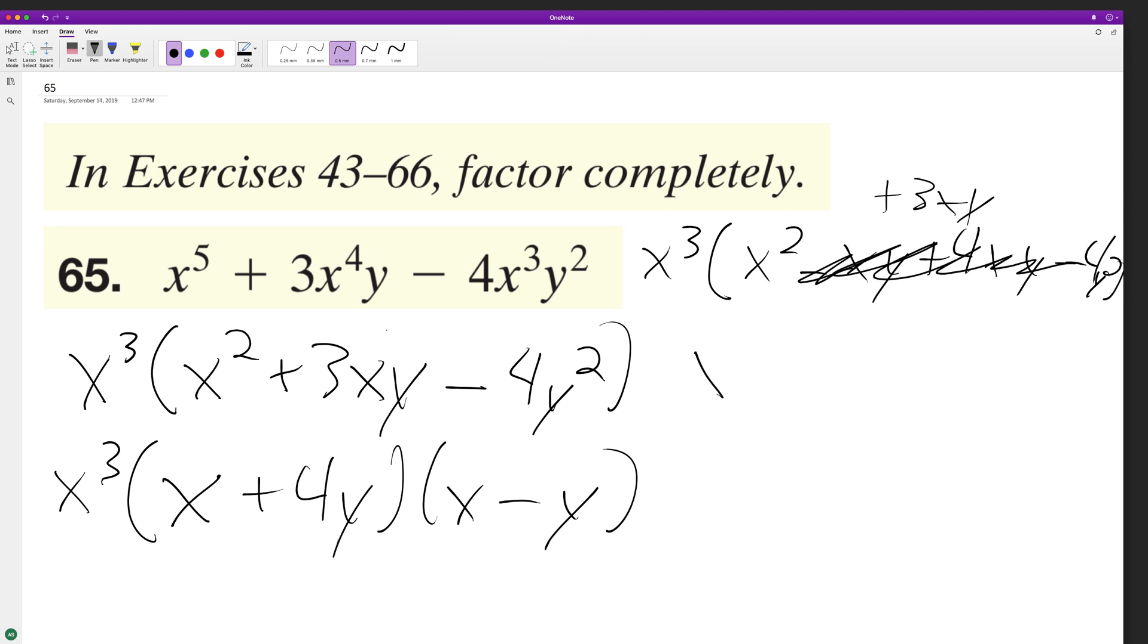So this ends up being x to the fifth plus 3x to the fourth y minus 4x cubed y squared. That's our original function, so our factorization is correct. I hope this video helped you out. Thanks for watching, have a great day.